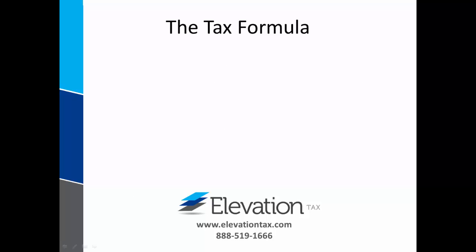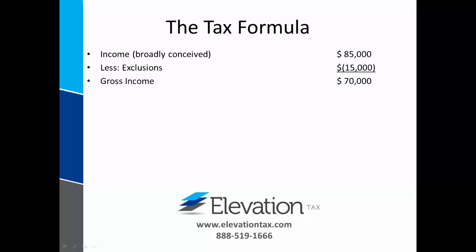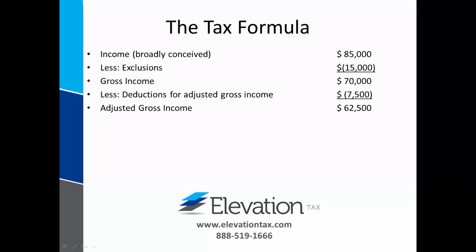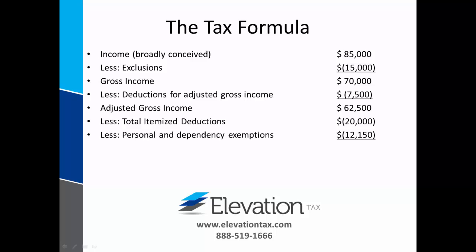Let's plug that into the tax formula. Income is $85,000 less the $15,000 exclusion, giving gross income of $70,000. They are able to take out their deductions for adjusted gross income of $7,500 to get an adjusted gross income of $62,500. They subtract their total itemized deductions of $20,000 and take out the personal and dependency exemptions of $12,150 to arrive at a taxable income of $30,350.